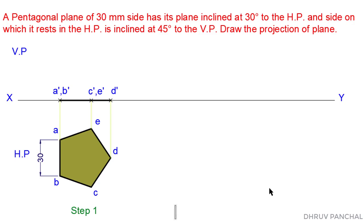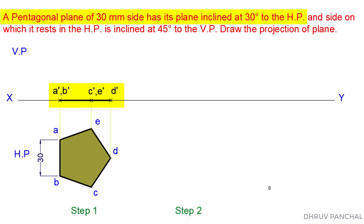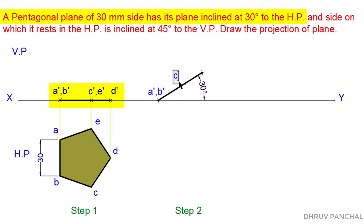In Step 2, we will consider the plane's inclination with the horizontal plane. We will draw the front view of Step 1 at an angle of 30 degrees in Step 2. Take any point on line XY and from that point draw a line at an angle of 30 degrees, and mark points A', B', C', D', and E' on it, and join them as shown.